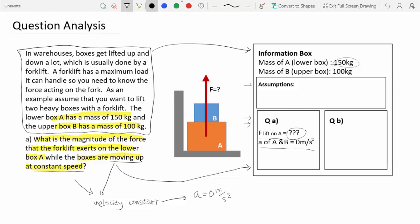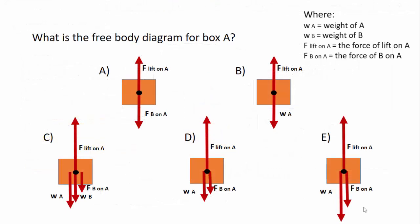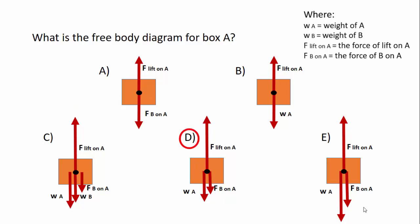Since I'm looking for the force of the lift on A, a good approach is to draw the free body diagram for A and then solve from there. Remember, a free body diagram shows the relative magnitude and direction of all the forces on an object. Based on this definition, pause the video and answer the question. The answer is D — now let's see why.